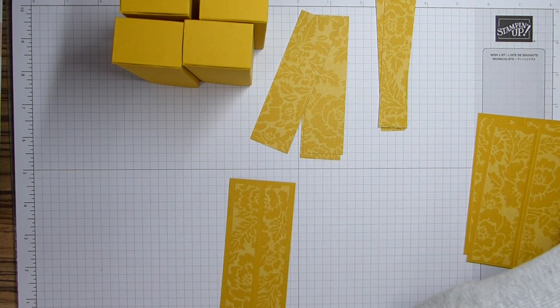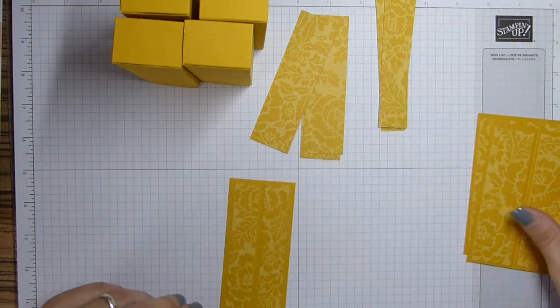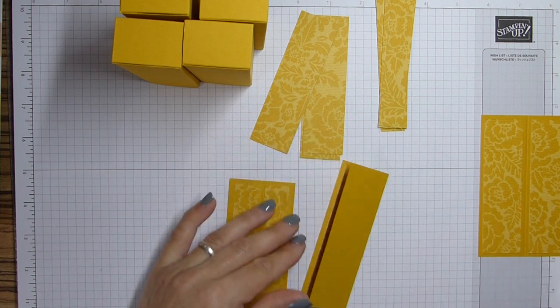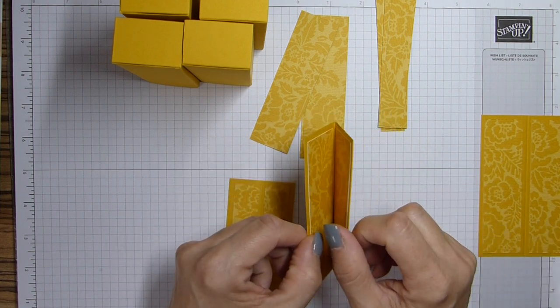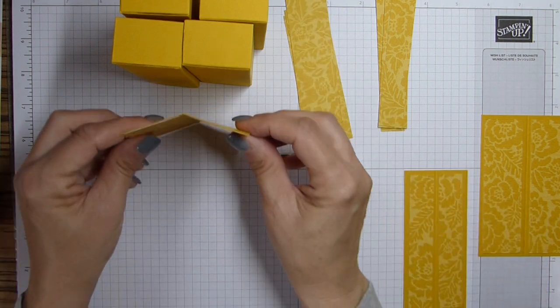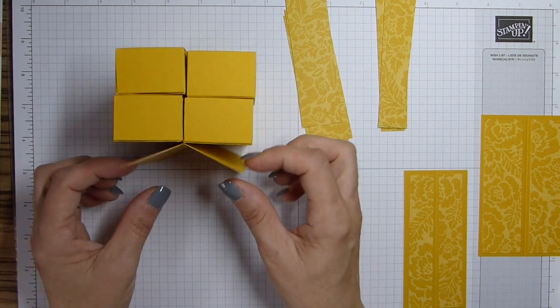So I just need to look at my original to see how they go together. So I'm going to fold this one in half. And you noticed how I folded that with the DSP towards each other. So this one is going to be stuck to the front of this one.